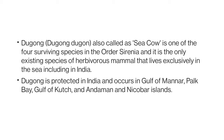In temperate regions, eelgrass is the dominant seagrass. In tropical regions, manatee grass — Syringodium filiforme — is found.